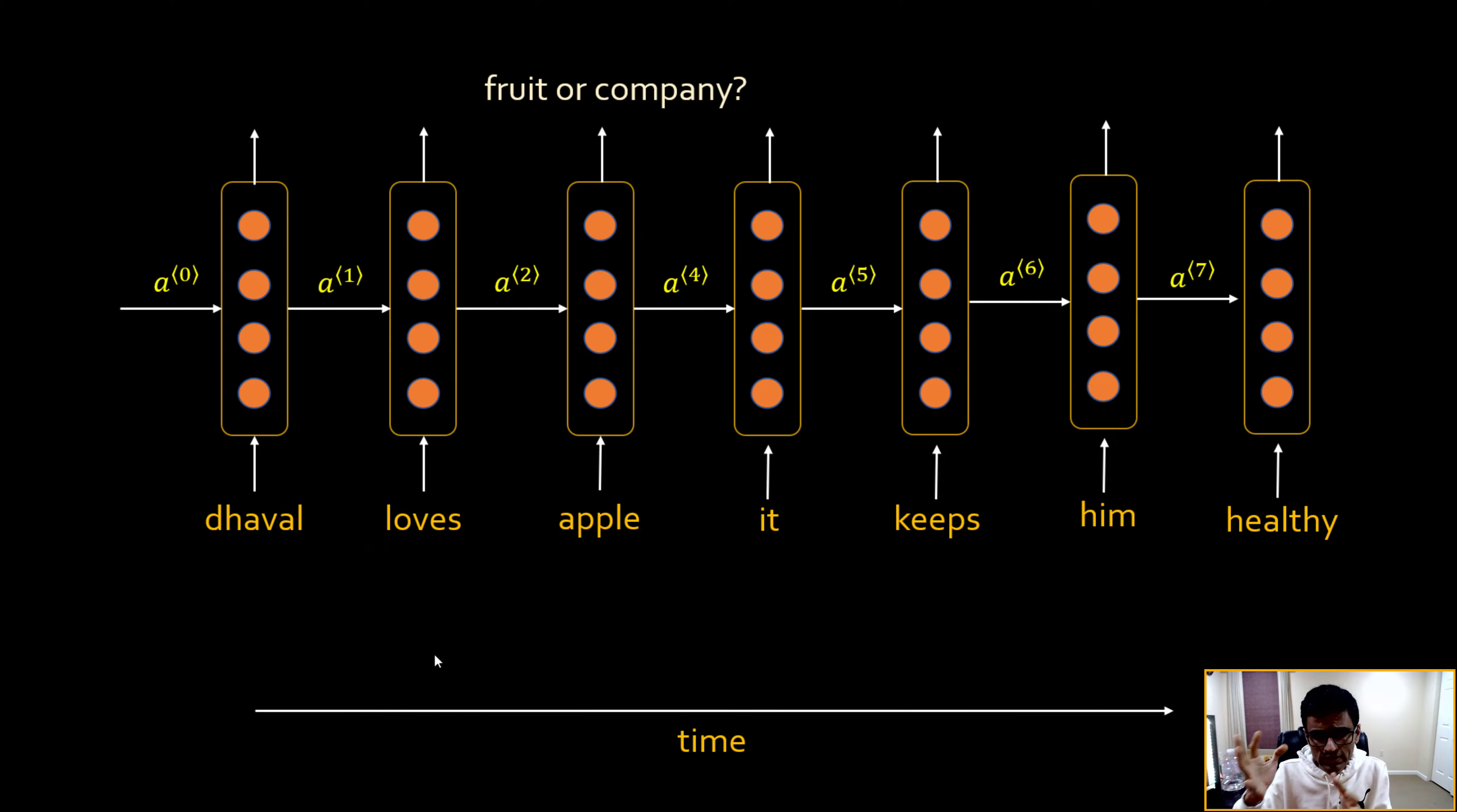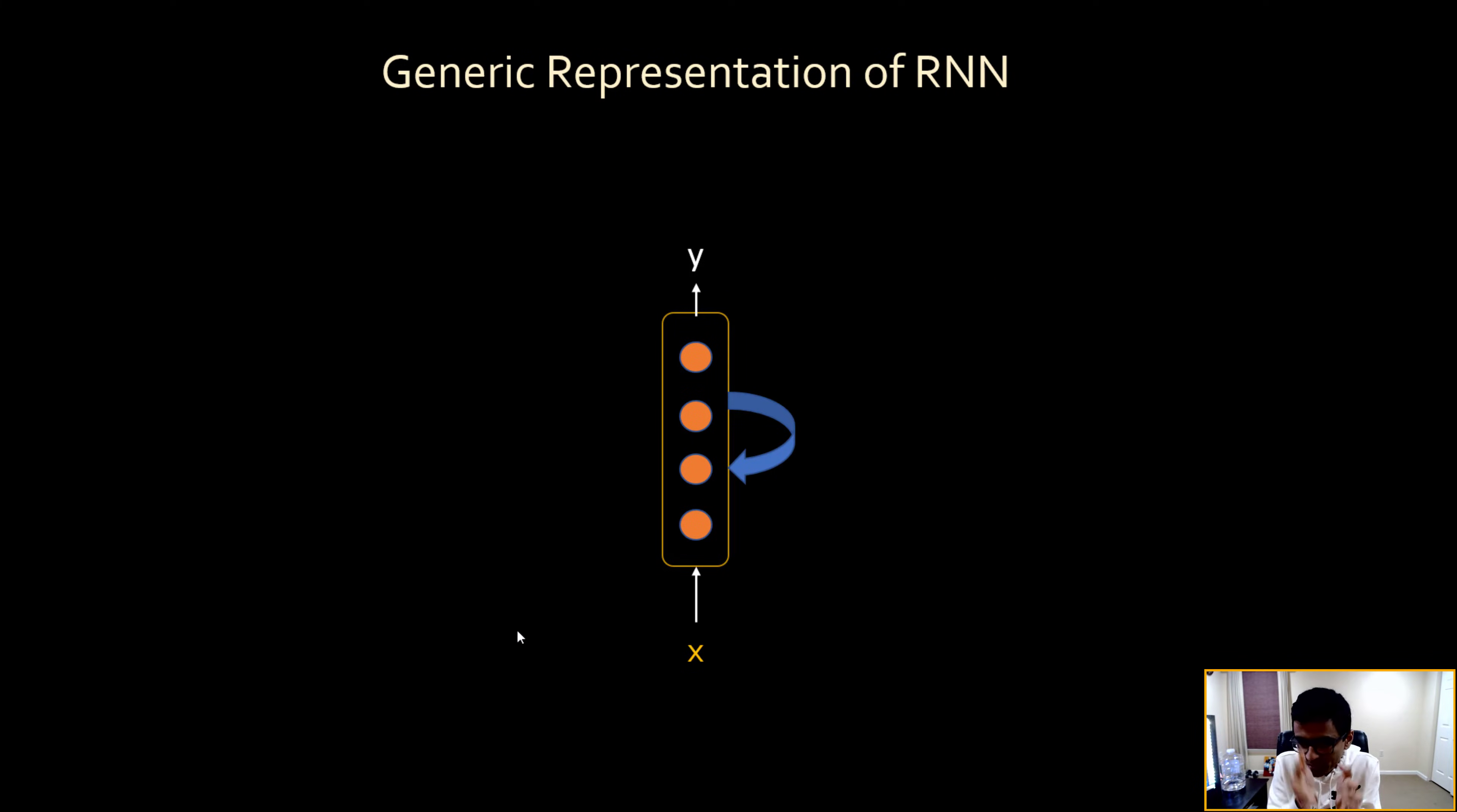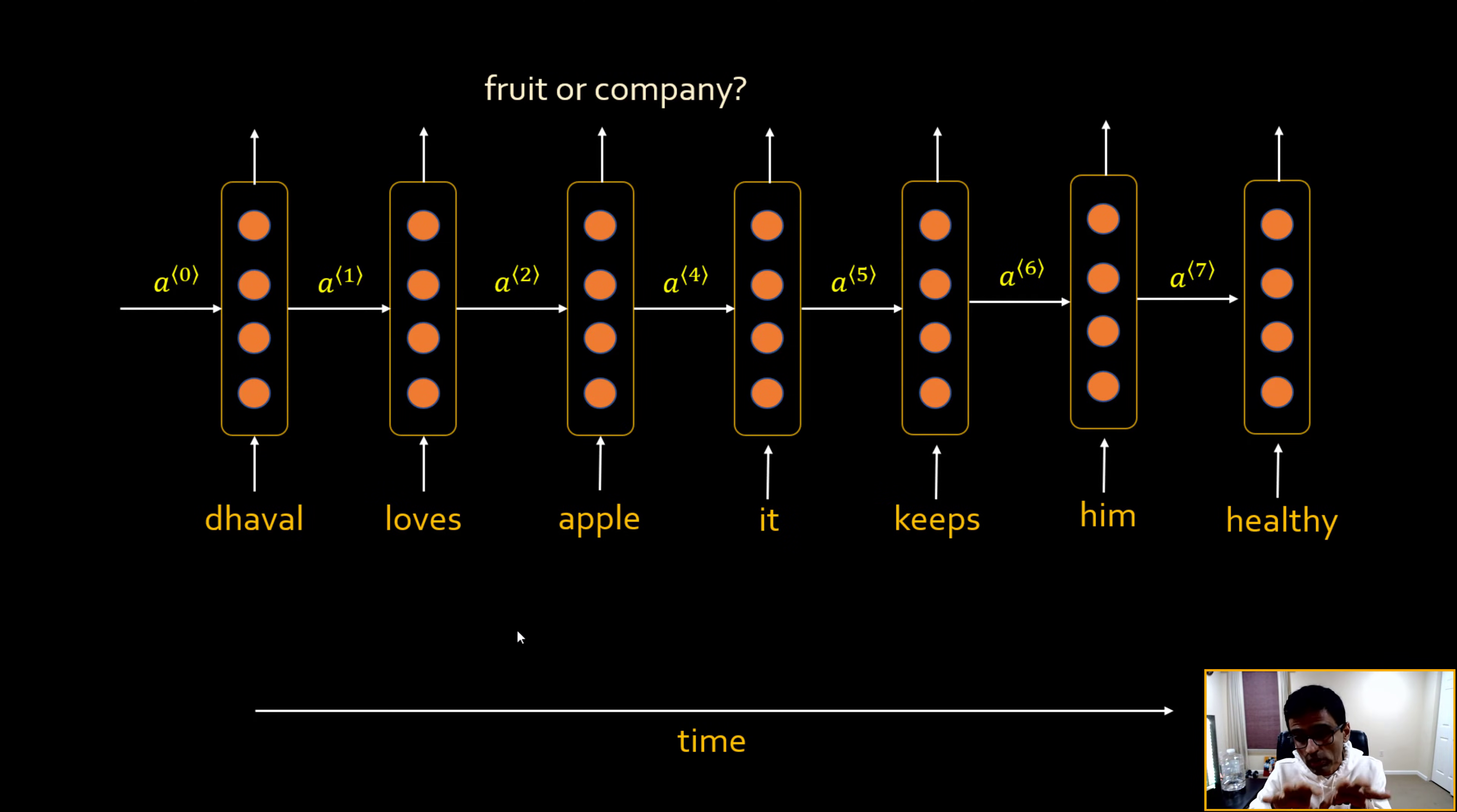People have a common confusion when they look at a graph like this and they think that it's a six or seven layer neural network. But no, look at this axis. The X axis is a time axis, so this is something you have to keep always in your mind, that the actual network is just this. It's a simple network, but when we get a sentence we feed every word one by one to this network and then it has a looping effect.